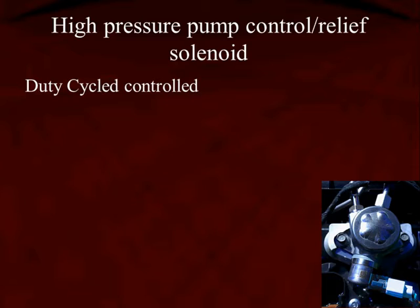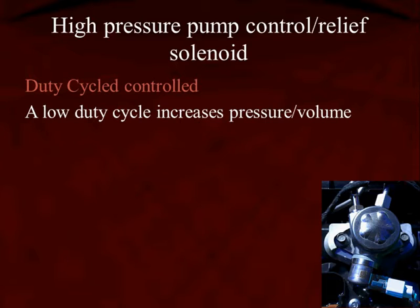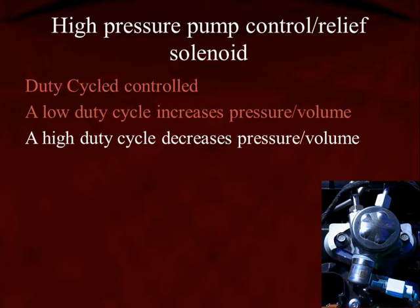This solenoid is duty cycle controlled, meaning the computer isn't just turning it on and off — it does so with a frequency in order to control the volume. A low duty cycle is what's going to increase the pressure or volume. This means that if this control solenoid loses power, it's going to default the high pressure pump to the highest possible pressure the manufacturer designed it to deliver. A high duty cycle is what's used to decrease the pressure and control it.